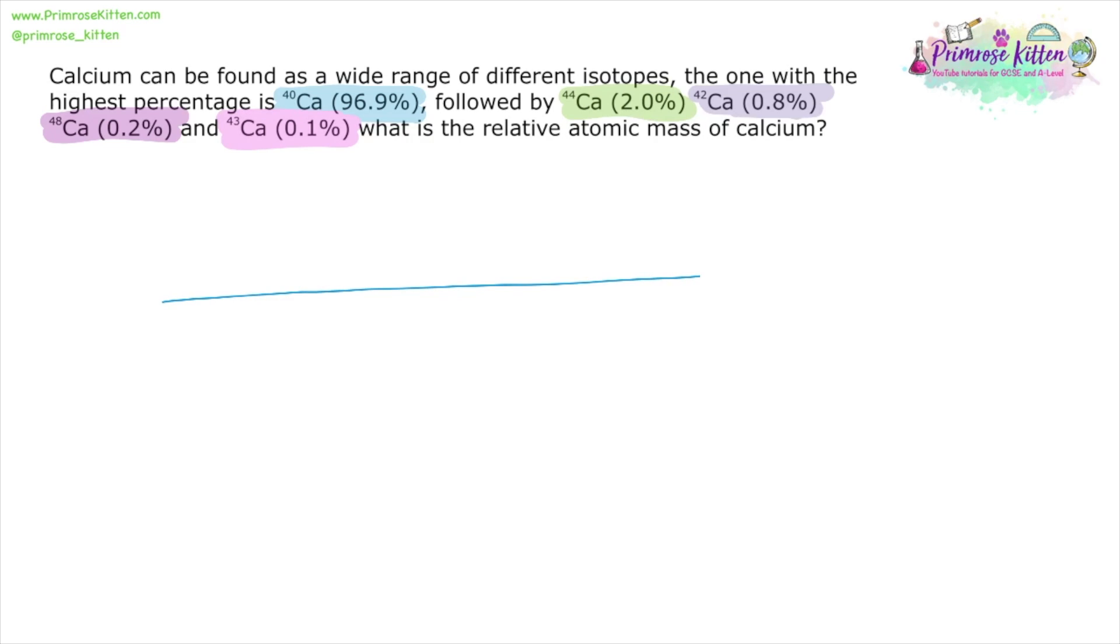Now there are five different isotopes here. We do exactly the same way, as a percentage, or we can think of it as assume we had 100 atoms: 96.9 times 40 plus 2.0 times 44 plus 0.8 times 42 plus 0.2 times 48 plus 0.1 times 43, all over 100, following BIDMAS.